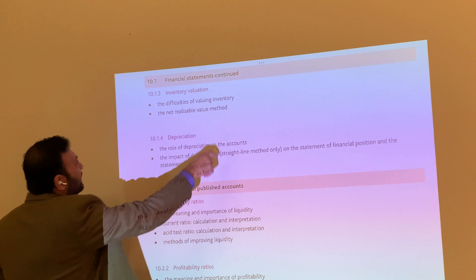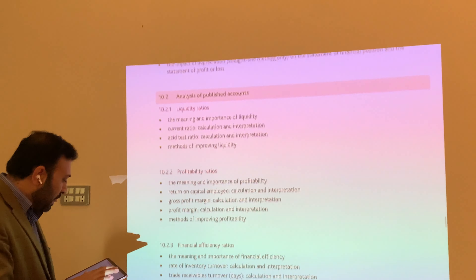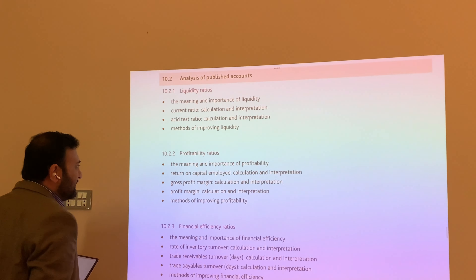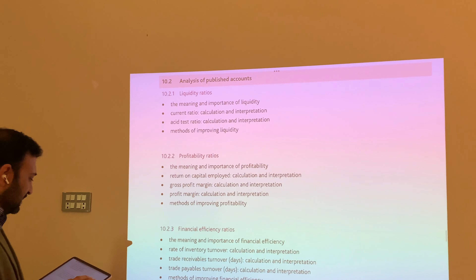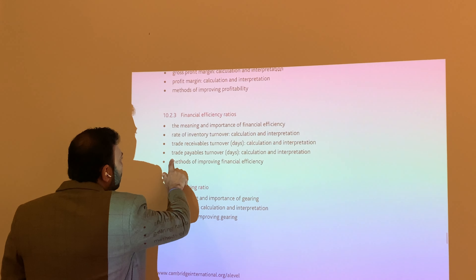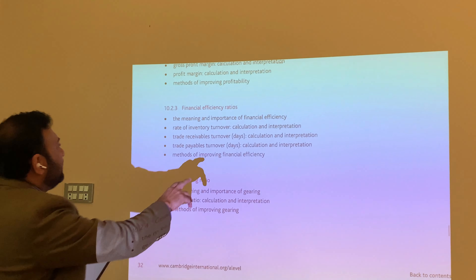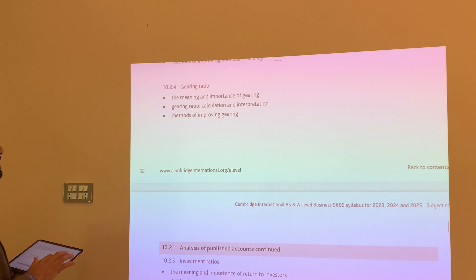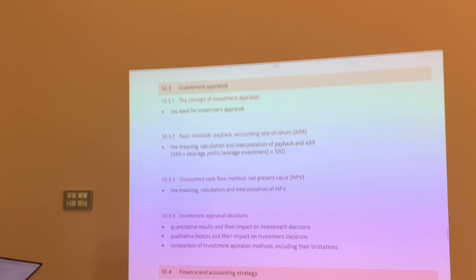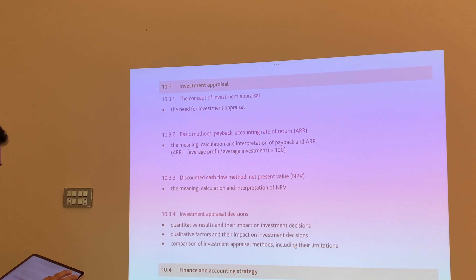To repeat: the difficulties in valuing inventory and the net realizable value method are new. Depreciation — the owner of depreciation account, straight line method — we have been already teaching that; if someone was not teaching it, please do teach it now. Analysis of depreciation account, liquidity ratios, and profitability ratios — already teaching. Gross profit margin, interpretation of profit margins, and methods of improving profitability. Financial efficiency ratios — trade receivable turnover and trade payable turnover — we will have to teach especially to students now. Methods of improving financial efficiency, rate of inventory turnover — already teaching. Gearing ratio — already teaching. Analysis of published accounts — calculation and interpretation. Investment appraisal was already there; it is now part of section number 10.